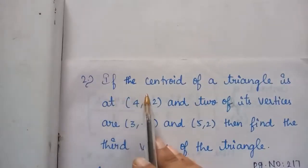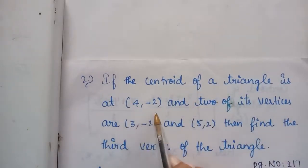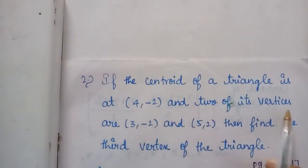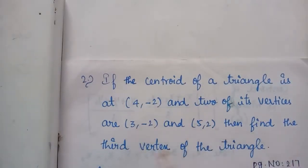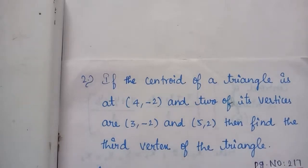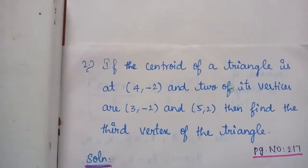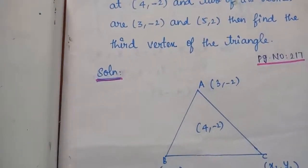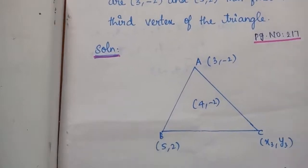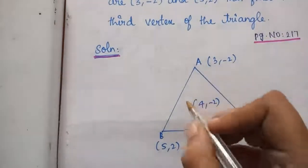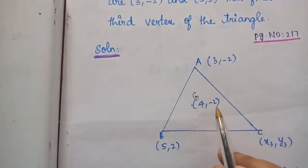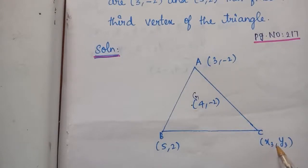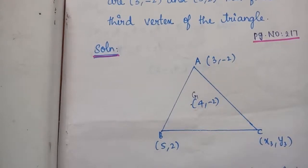Problem number 2, page 217: If the centroid of a triangle is at (4,-2) and 2 of its vertices are (3,-2) and (5,2), then find the third vertex of the triangle. The centroid is given and two vertices are given; we have to find the third vertex. Let the unknown third vertex be (X3, Y3).